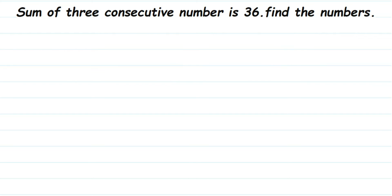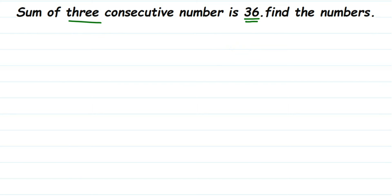So here they're saying that when you add three consecutive numbers — we don't know what those three numbers are — the sum is 36, and you have to find the numbers. For example, if I add four, five, and six, those are consecutive. Since we don't know the numbers, we have to assume a variable.